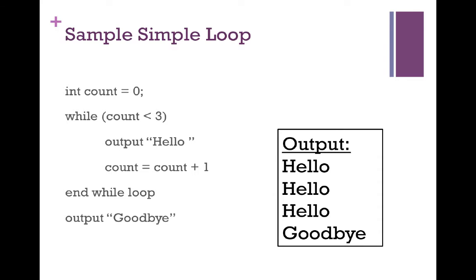Let's take a look at this simple loop. We begin with an integer variable called count and initialize it to 0. We start our while loop and say while count is less than 3, we are going to output the word hello, then we will increase count by 1 and check our condition again. If that condition is still true, we'll go back through our loop body, but if not, we will exit out and print goodbye.